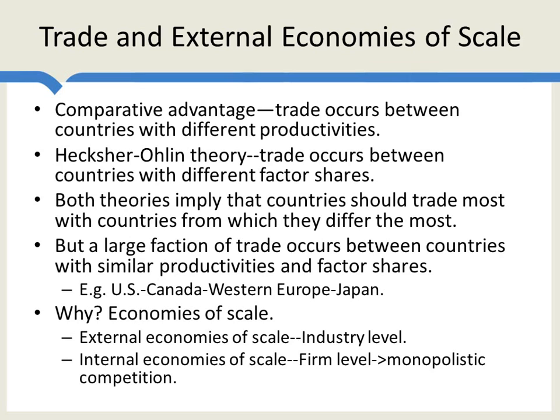In particular, we're going to be focusing on economies of scale, which come in two types. First, external economies of scale — these are at the industry level. Then second, internal economies of scale at the firm level. It turns out that the second is more difficult to analyze analytically because it requires us to understand monopolistic competition. We can't have straightforward competition with internal economies of scale at the firm level, so we'll talk more about that in a future lecture. Today we're going to focus on external economies of scale.